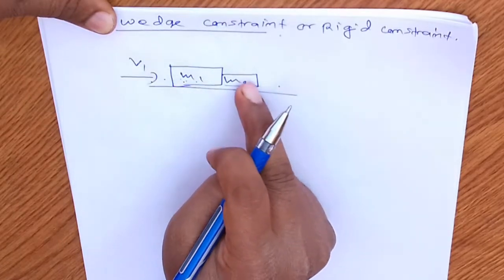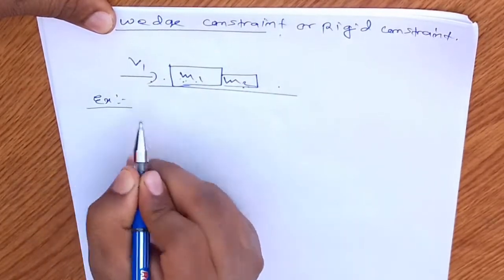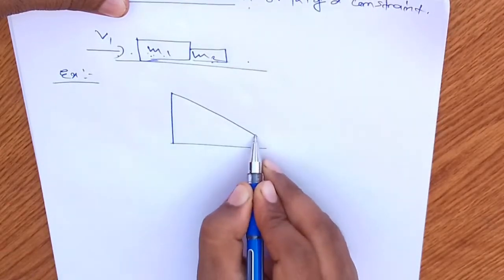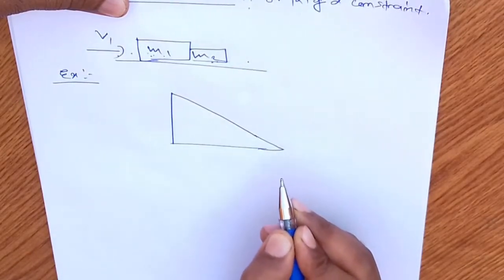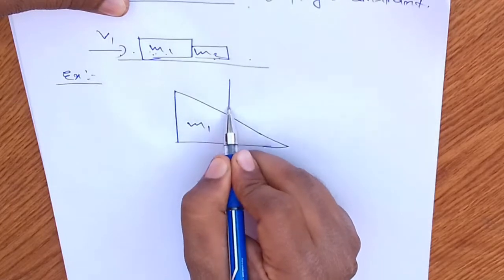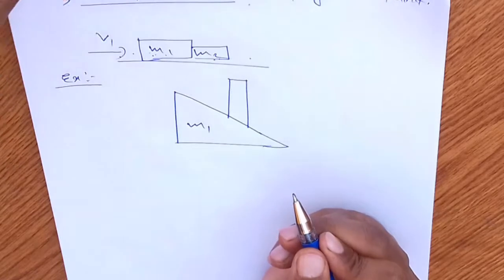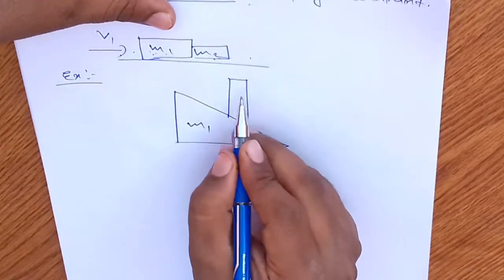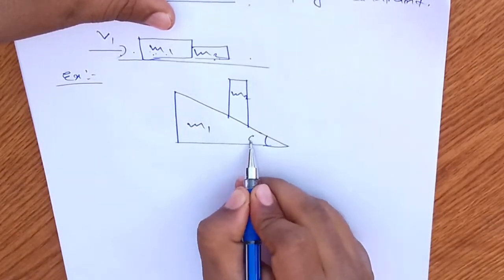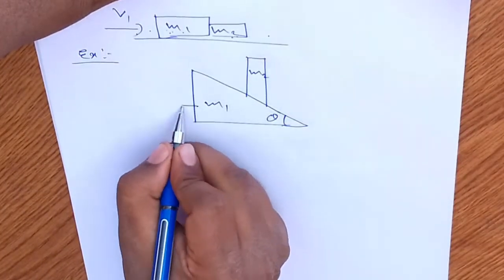So what will be the relation between the velocities of m1 and m2 in contact? I am explaining all this with one single example that will demonstrate all the facts and relations. To identify the relation between two rigid bodies in contact — this one is m1 and this one is m2 — these are two rigid bodies. I am taking some angle theta here.